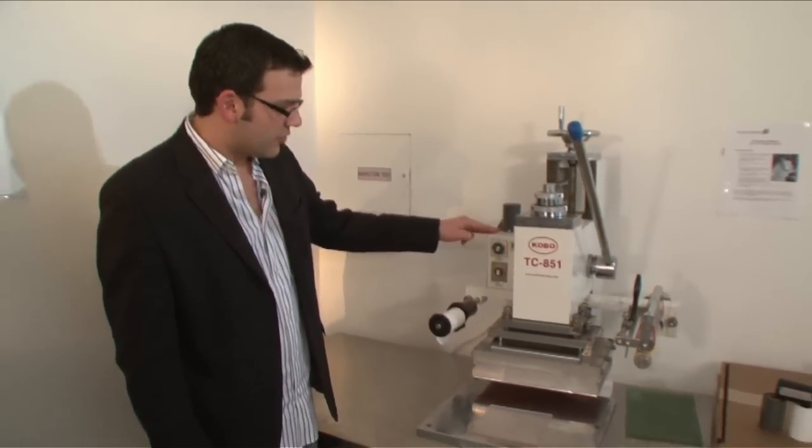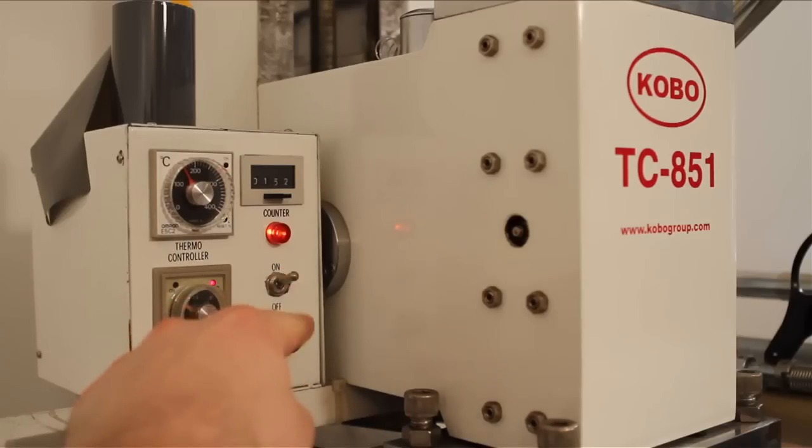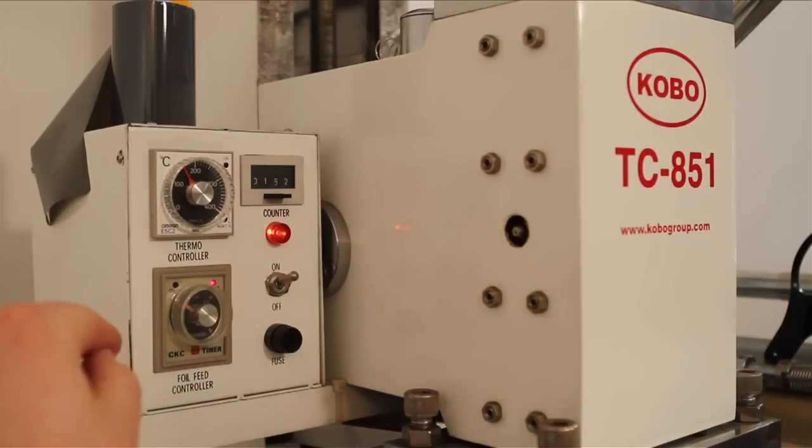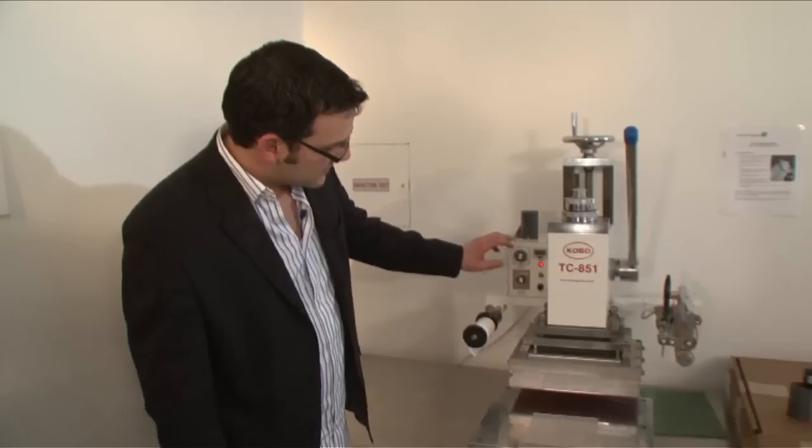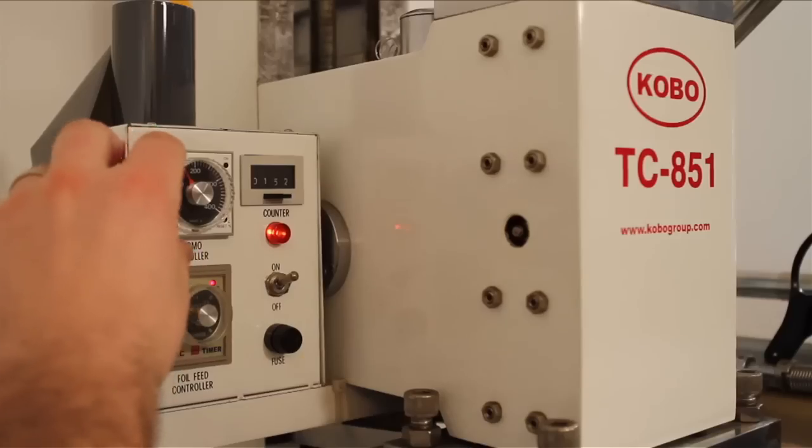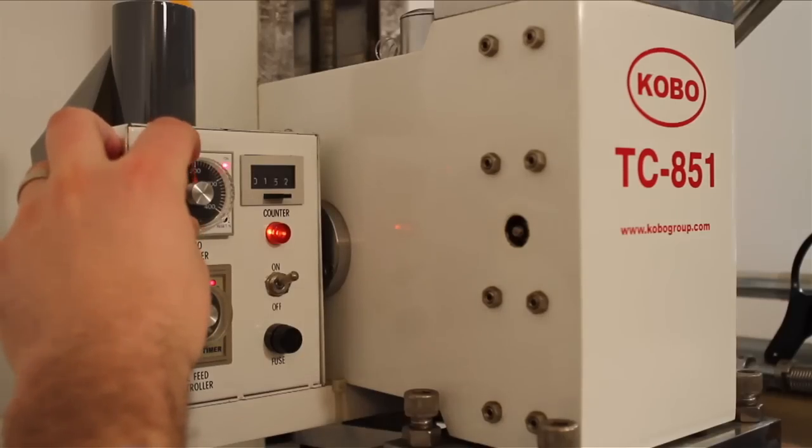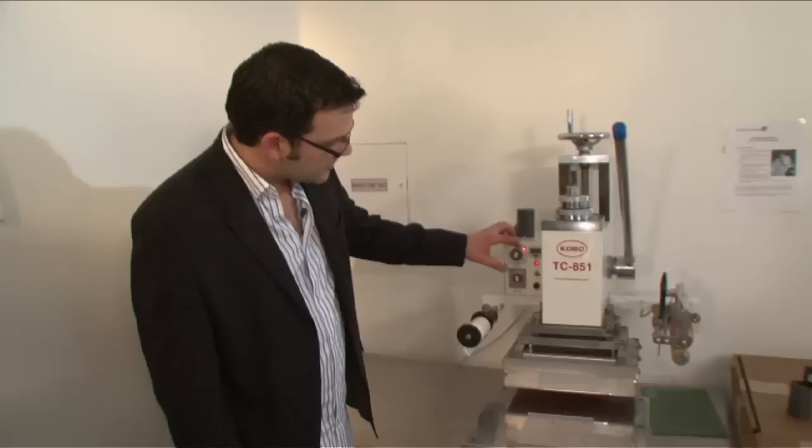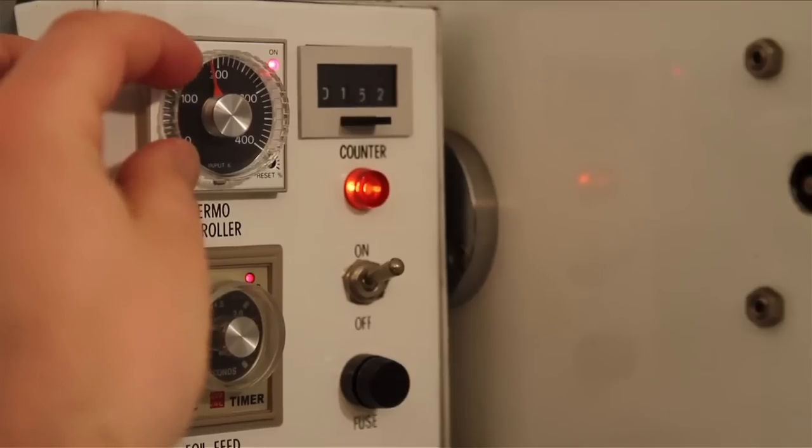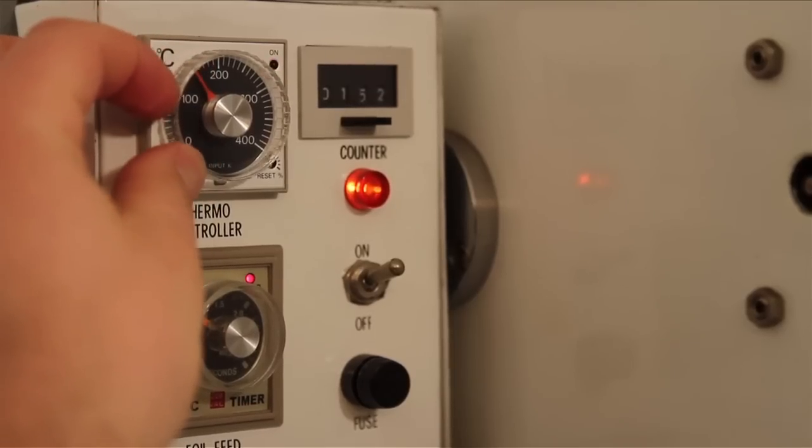So next we have our control panel. A couple of things in our control panel. We have our on off switch. And right here we have our fuse. And here we have our temperature control. As I said, we're going to run at about 170 degrees Celsius. And you can see when I turn it up, our light comes on, which means that it's still heating. Once our light comes off, we're up to temperature.